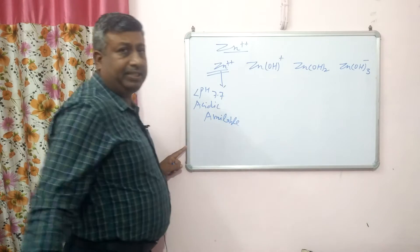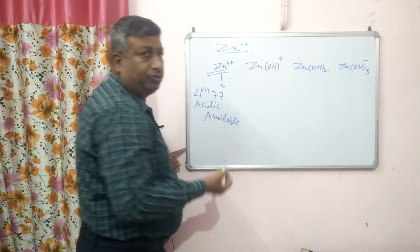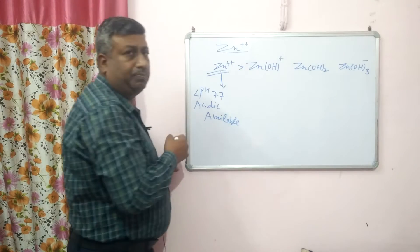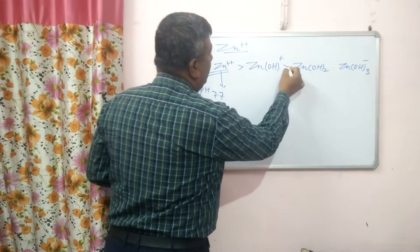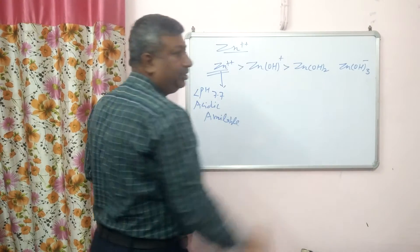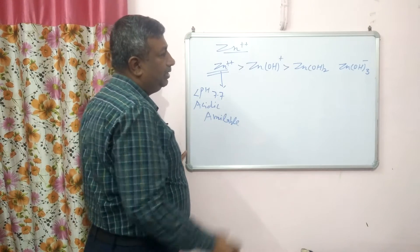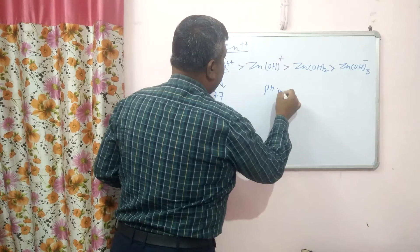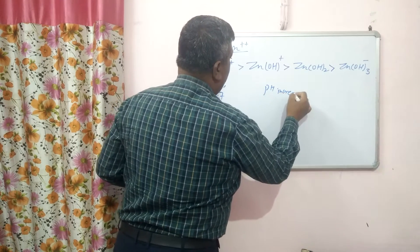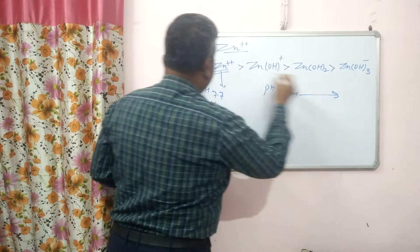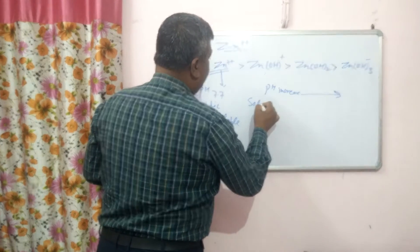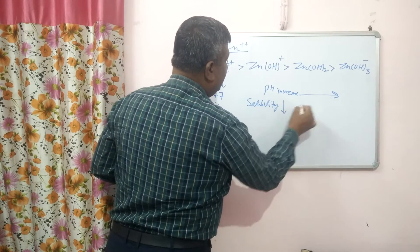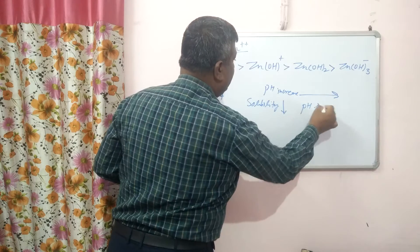As the pH is increased, solubility decreases. Zn²⁺ is more soluble than ZnOH⁺, and ZnOH⁺ is more soluble than Zn(OH)₂. So as pH increases, solubility decreases.